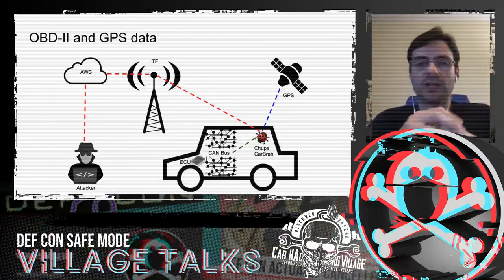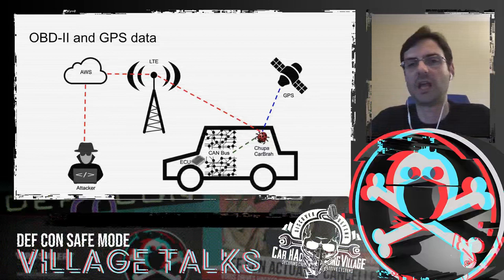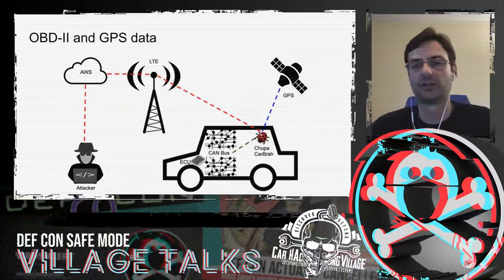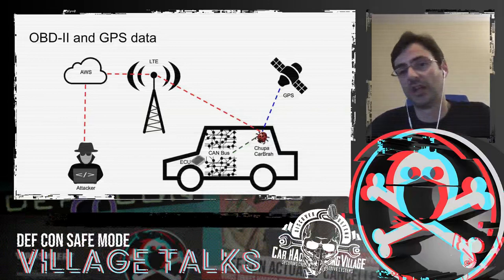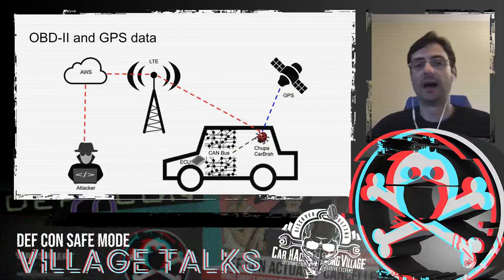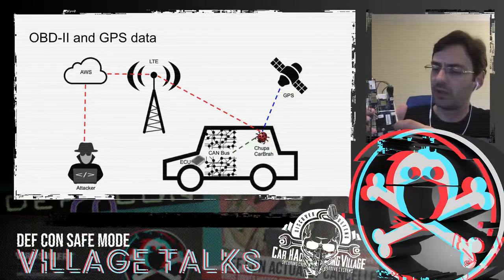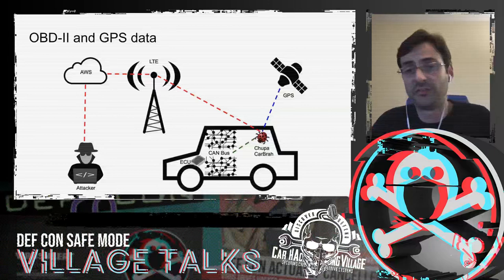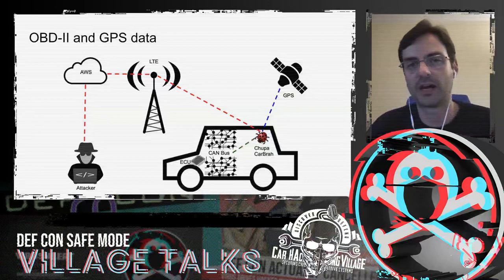One cool thing about using a single board computer is you can easily expand it to different applications. For instance, you can create a geofence application — maybe disable your car if it goes too far, or track it back. You can plug USB cameras and microphones to capture audio. You can even use servos because the BeagleBone Blue is intended for robotic applications, so you can plug servos on the rails and perform physical actions inside your car. You can even try to robotify your car.